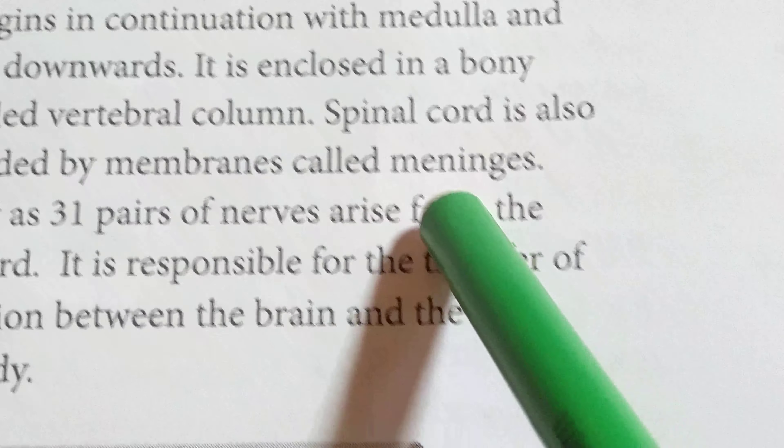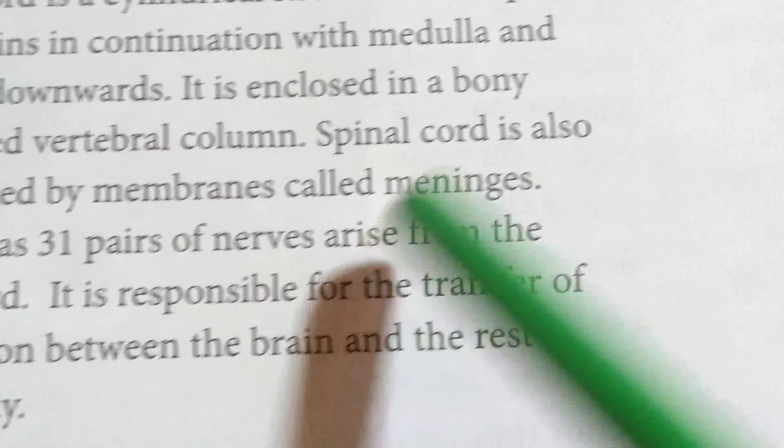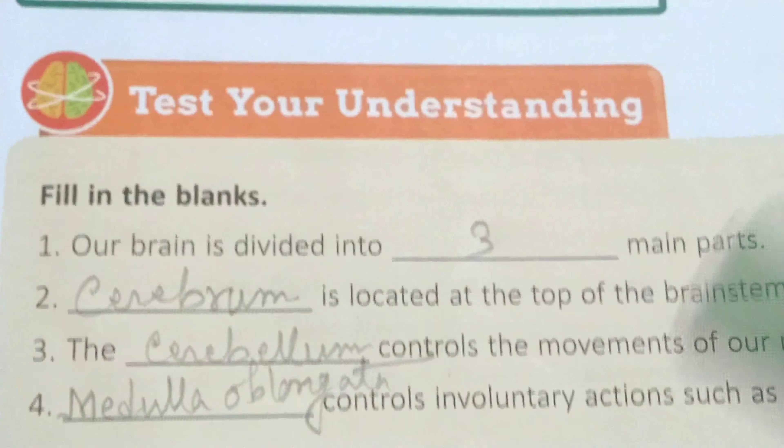The spinal cord is also surrounded by membranes called meninges. As many as 31 pairs of nerves arise from the spinal cord — these are known as spinal nerves, while nerves from the brain are cranial nerves. The spinal cord is responsible for the transfer of information between the brain and the rest of the body.